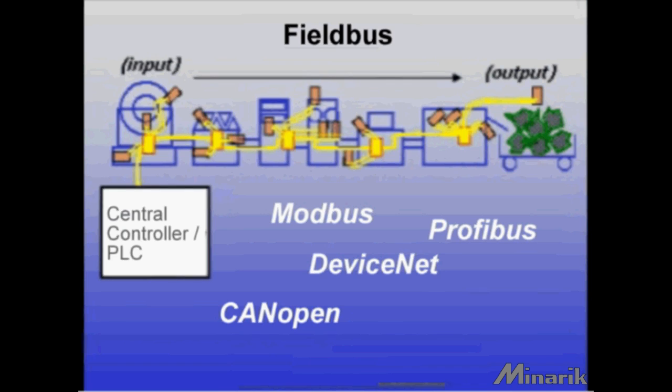Some networks were designed with specialized purposes. Canbus is used on vehicles with computerized systems, Lawnworks is used for automating lighting and HVAC systems in buildings, and there are several others.